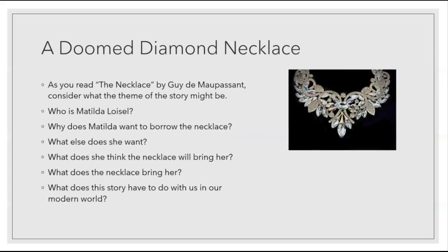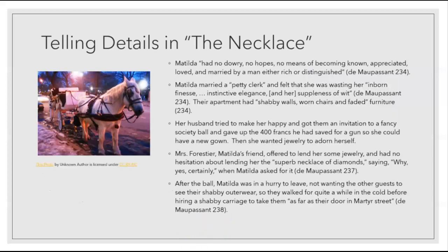As we read the story The Necklace by Guy de Maupassant, consider what the theme of the story might be. Who is Matilda Loisel? Why does she want to borrow a necklace? Is that all she wants, or does she want something else? What does she think the necklace will bring her, and what does that necklace actually bring her? Questions can come into your mind as you read literature, and hopefully the story will answer them — or sometimes it will just bring more questions. What does this story possibly have to do with us in our modern world? There are some telling details in The Necklace, like most stories, and these details can foreshadow what's going to happen next or help us understand more richly what is going on.